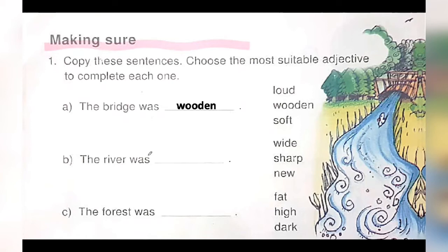B: 'The river was blank.' Wide, sharp, or new? The river was wide. C: 'The forest was blank.' Can it be fat? No. Can it be high? No. Can it be dark? Yes. So, the forest was dark.